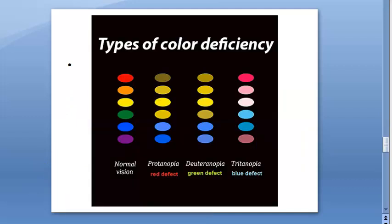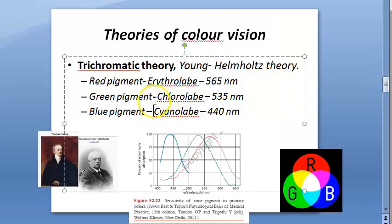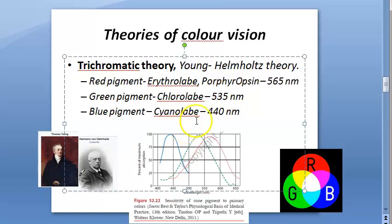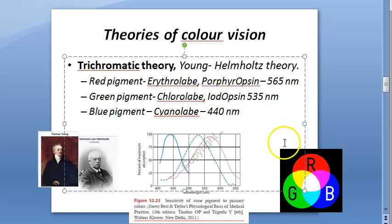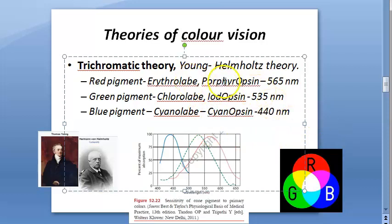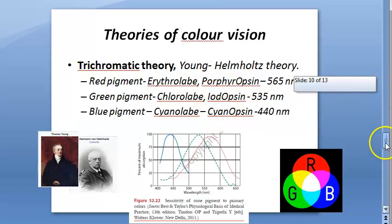Going back - red pigment is also called porphyropsin, green is called iodopsin, and blue is called cyanopsin. So: porphyropsin for red, iodopsin for green, and cyanopsin for blue. These are the alternate names for the cone pigments.